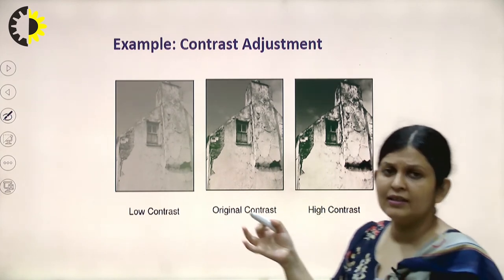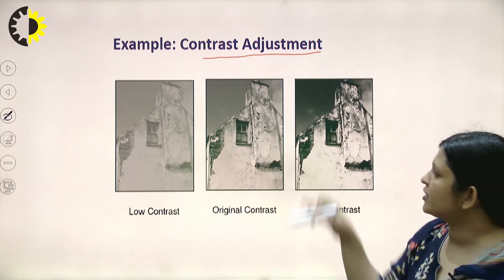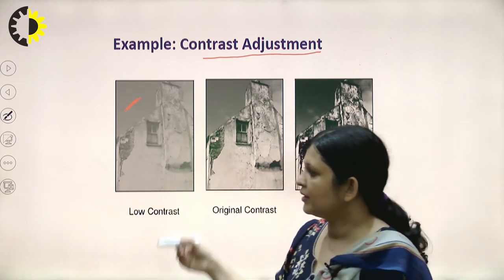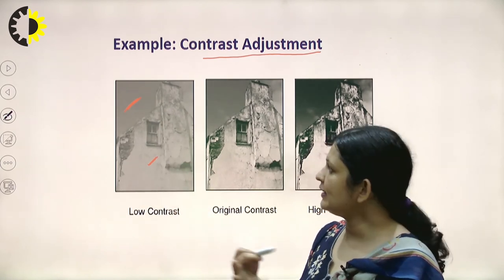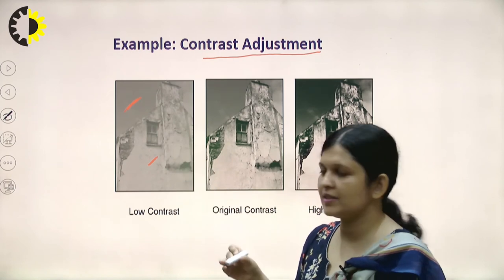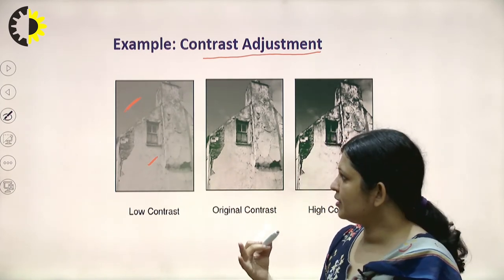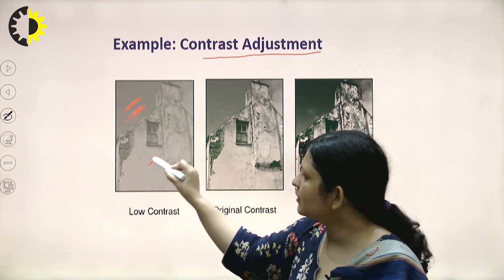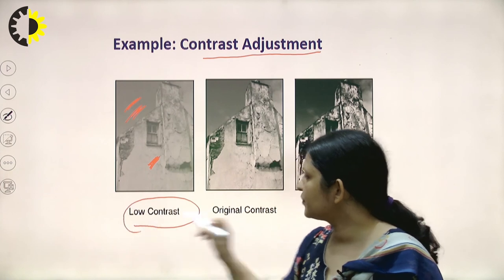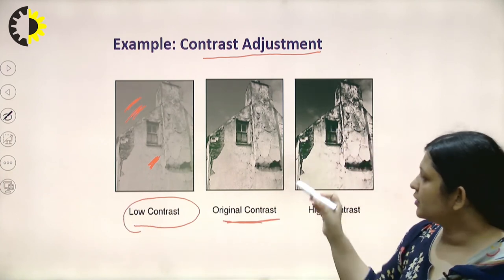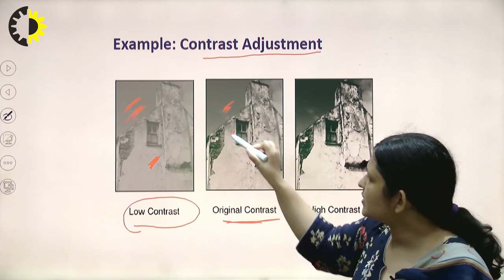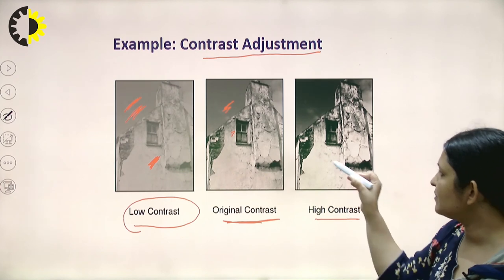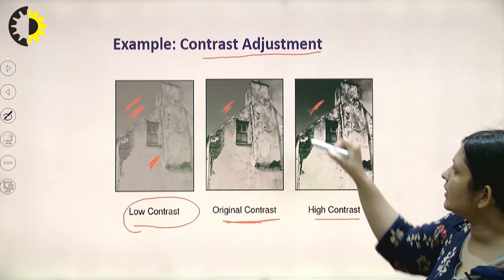Image processing is also applied in contrast adjustment. Contrast refers to how clearly we can distinguish between the background and objects in front. A low contrast image has a background color similar to the foreground object. Applying image processing, we can create a high-contrast image where the background and foreground are clearly distinguishable.